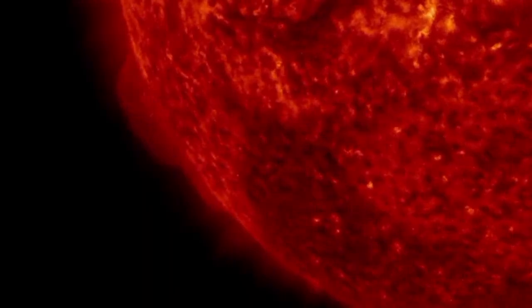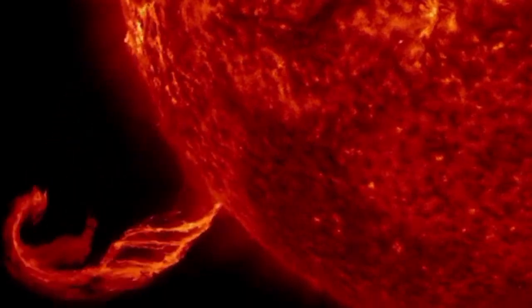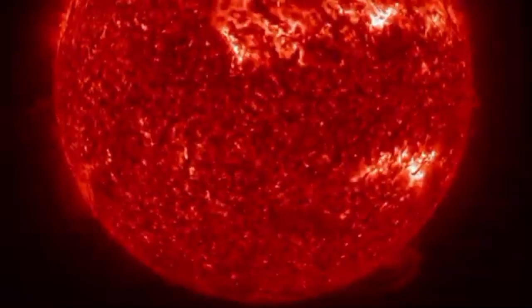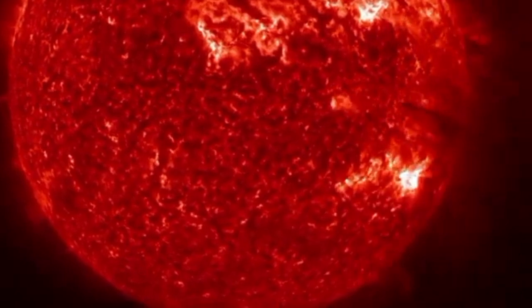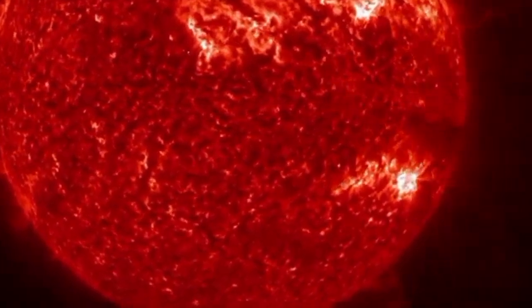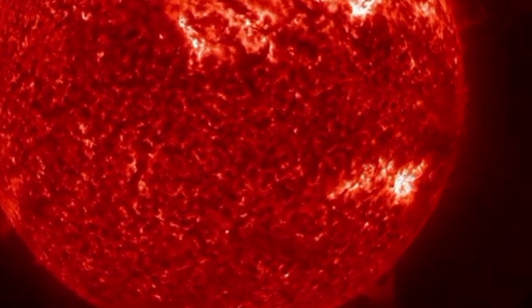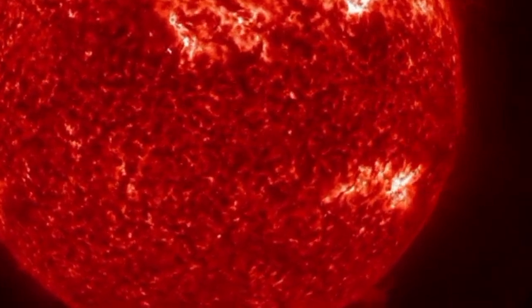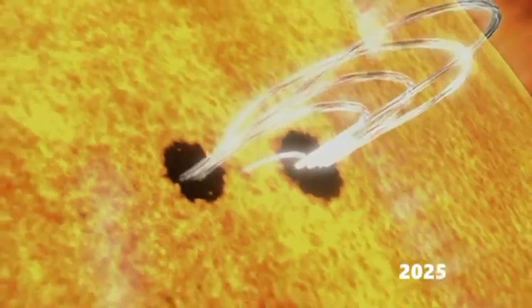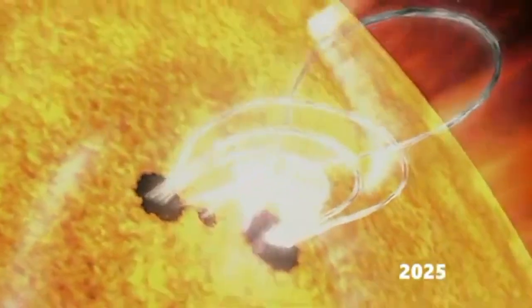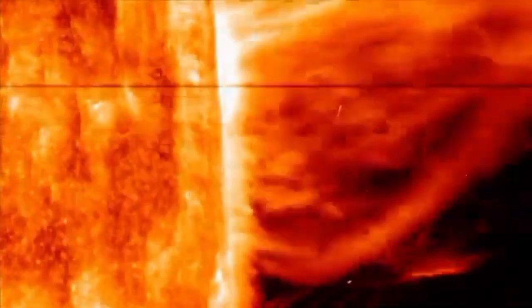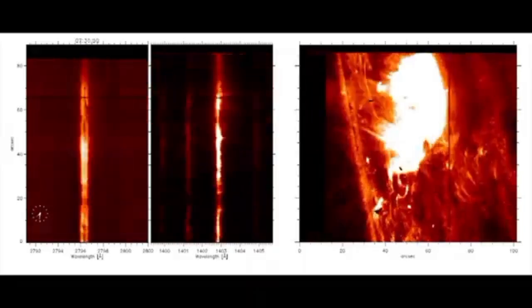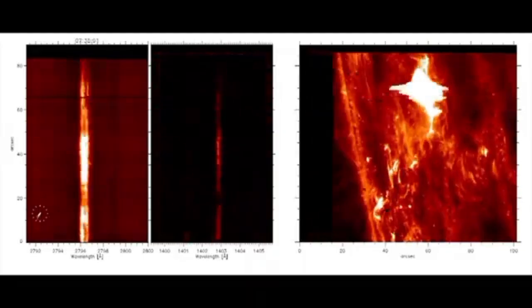Should Betelgeuse explode, the initial signal could be a burst of neutrinos, tiny subatomic particles that travel faster than light and can escape from the star. These neutrinos would reach Earth hours before the light from the explosion itself. Once the light does arrive, Betelgeuse could shine brighter than the full moon, casting eerie shadows and illuminating the night sky for weeks. A supernova of this magnitude would present an unprecedented opportunity for scientists to observe stellar death in real time.